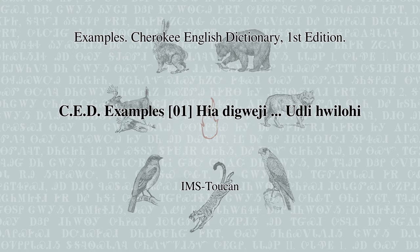About the pronoun 'you.' In English this pronoun can refer to one person, two people, or more people. Cherokee has three different forms for 'you': a different word when referring to one person, another word when referring to two people, and another when referring to three or more people. When you hear the word 'you,' assume it refers to one person unless it is followed by the word 'both' or the word 'all.'